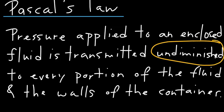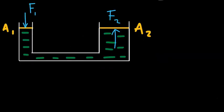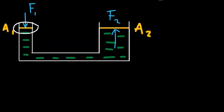To understand Pascal's Law, let's look at the following arrangement. You have a U-shaped tube with different cross-sections on the left and the right, and this tube contains some fluid — it can be oil, it can be water, some kind of fluid. On the left arm and on the right arm of this tube, you have pistons of two different sizes.